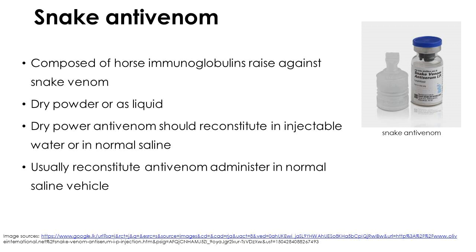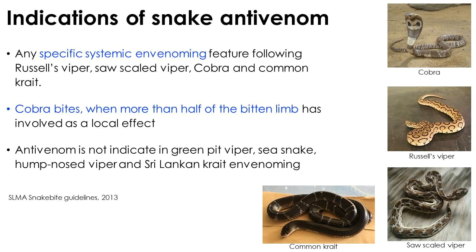Snake antivenom is composed of host immunoglobulins or animal immunoglobulins raised against a particular type of snake venom. It is either in dry powder form or in liquid form. Dry powder antivenom should be reconstituted in injectable water or normal saline. Usually the reconstituted antivenom is administered in a normal saline vehicle. There are several indications for administration of antivenom in Sri Lanka; at the moment, Indian polyvalent antivenom is used.